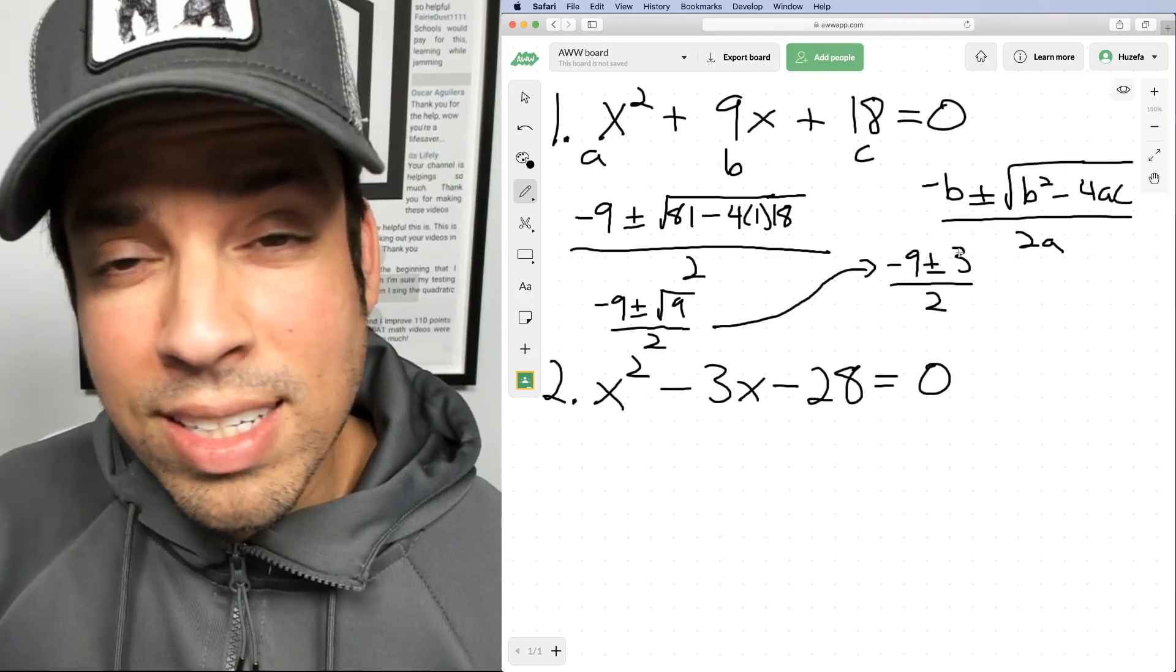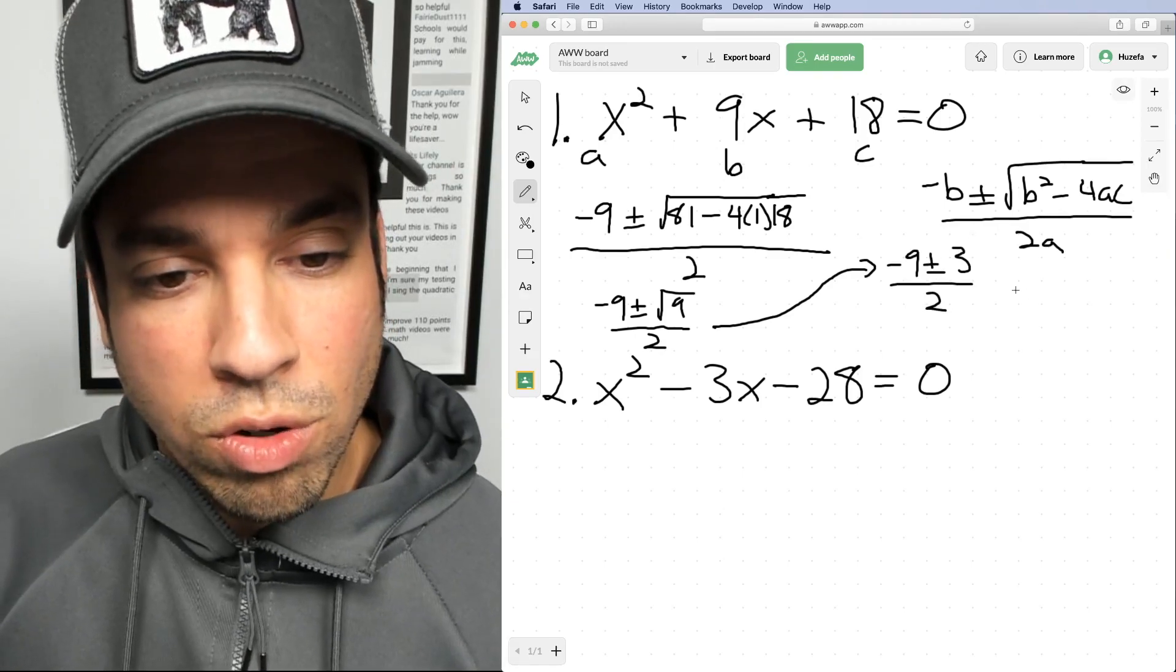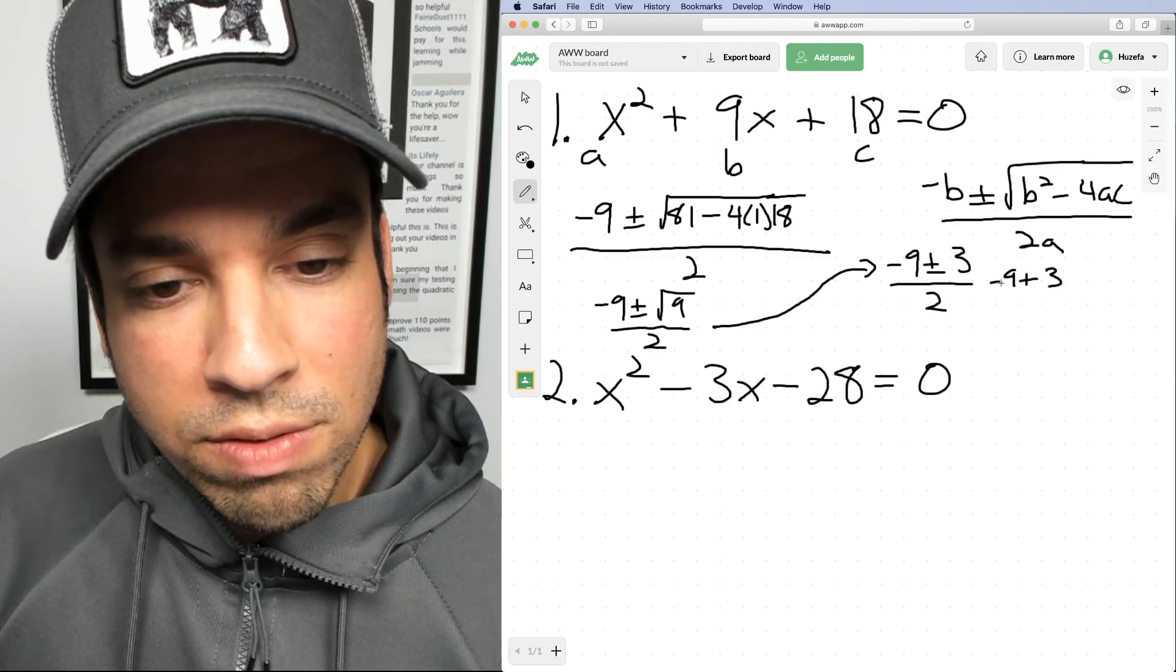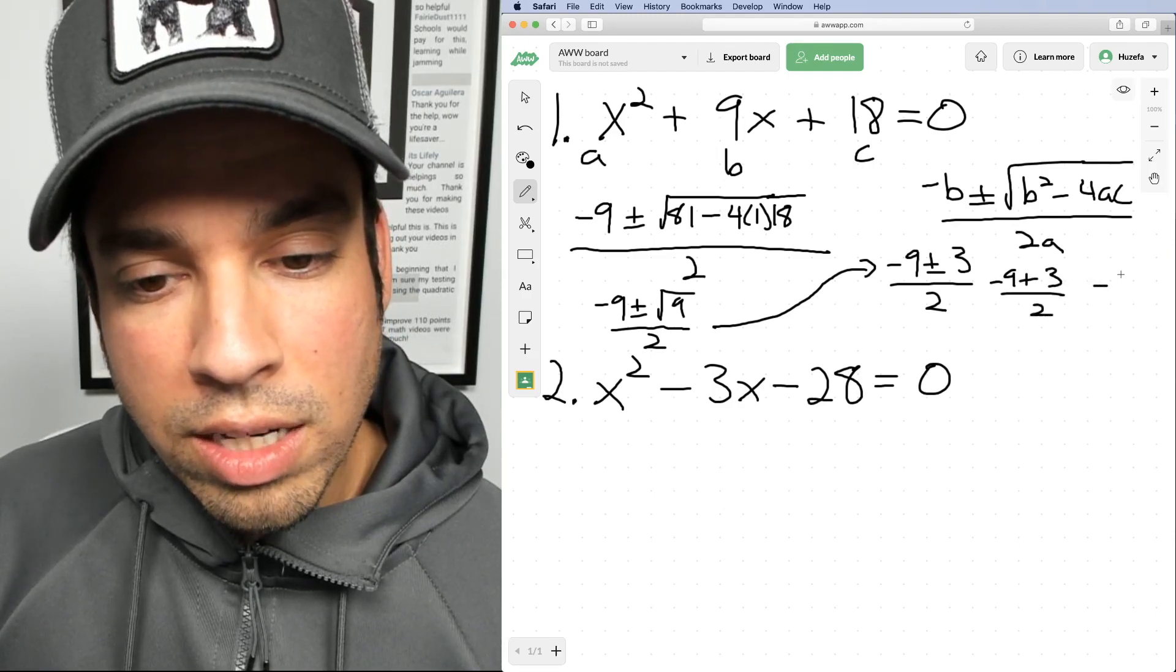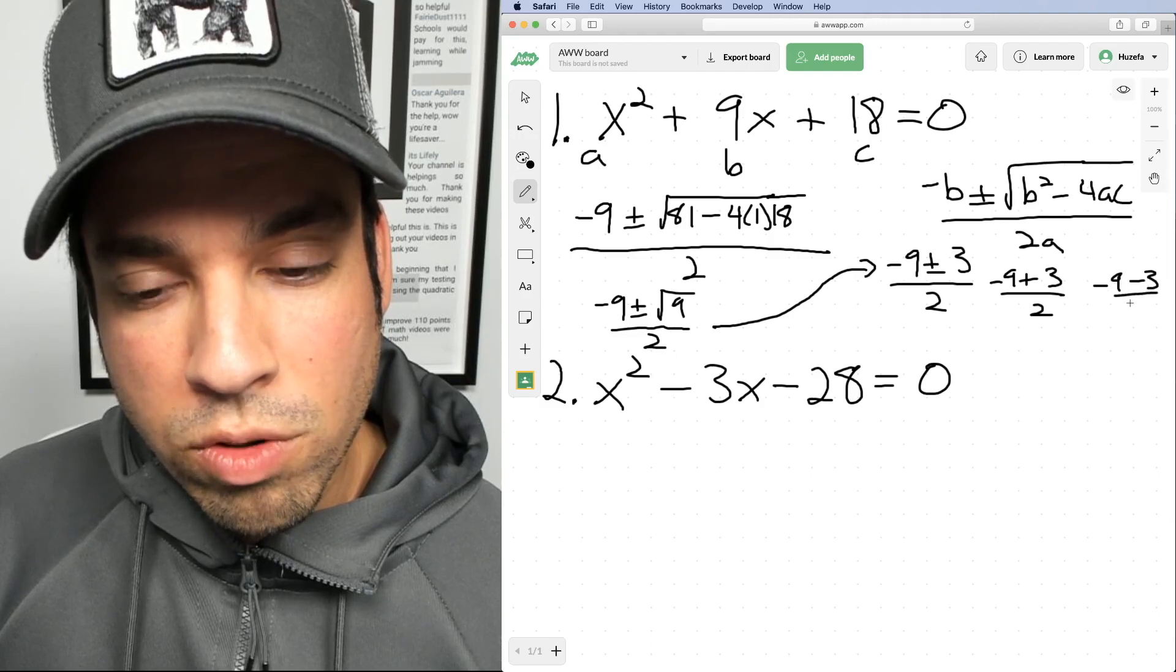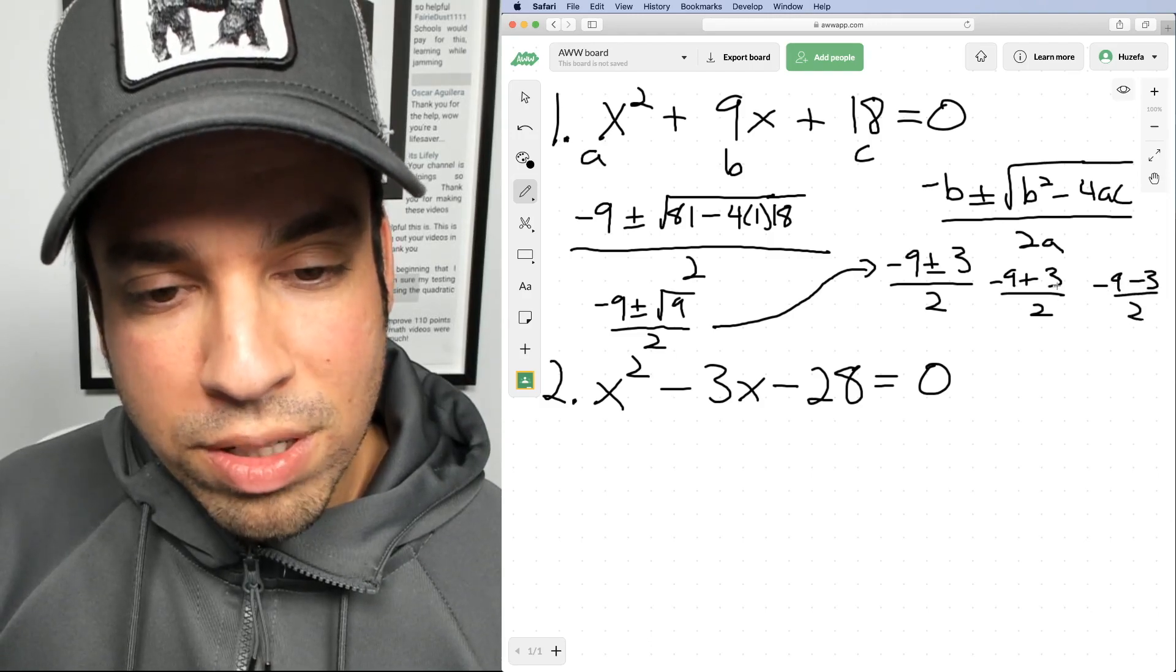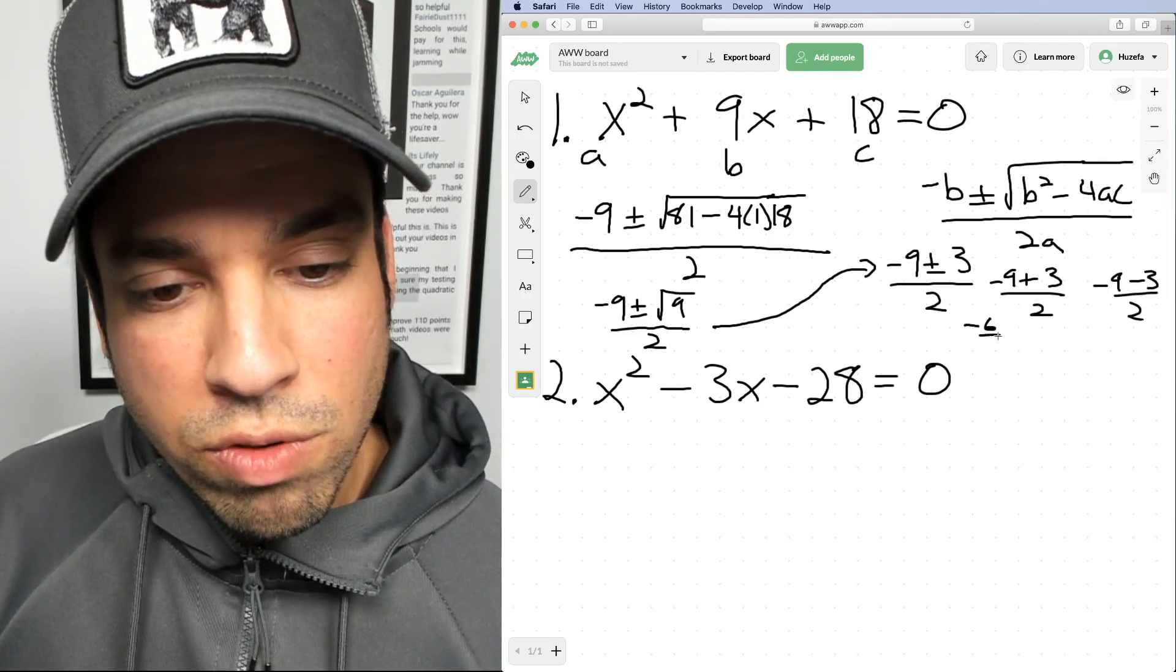So what is that plus or minus? It indicates two different answers. So for example, we've got negative nine plus three over two, and negative nine minus three over two. This becomes negative nine plus three is negative six over two. This becomes negative nine minus three is negative 12 over two.